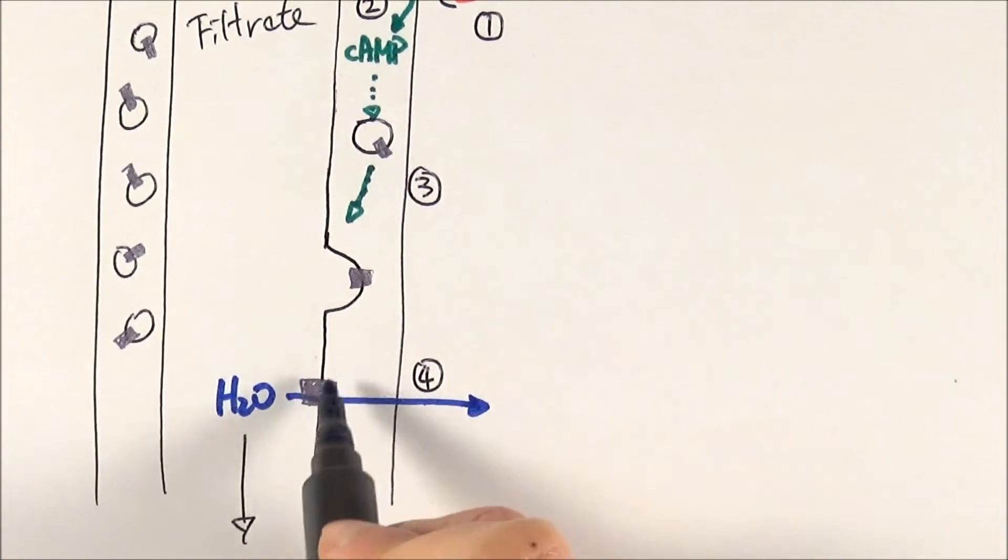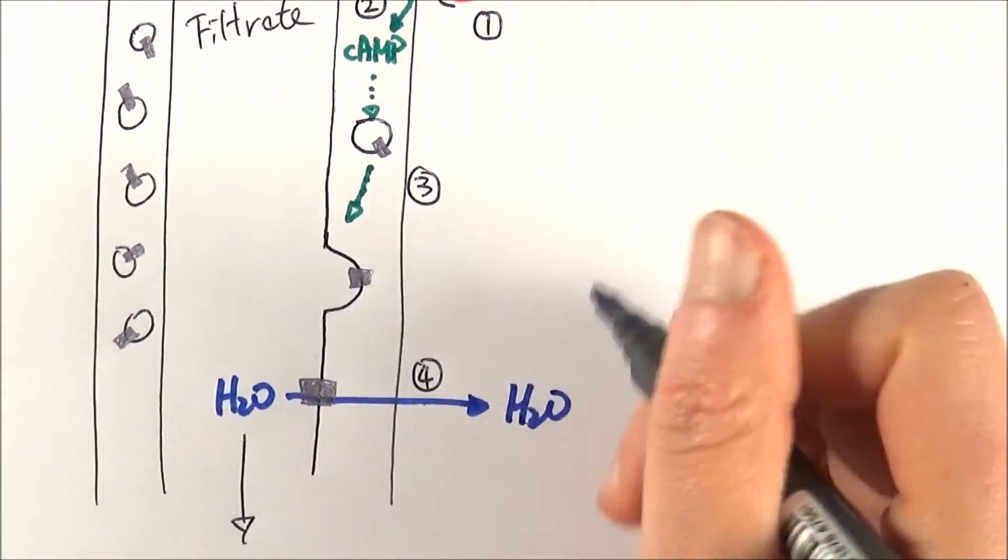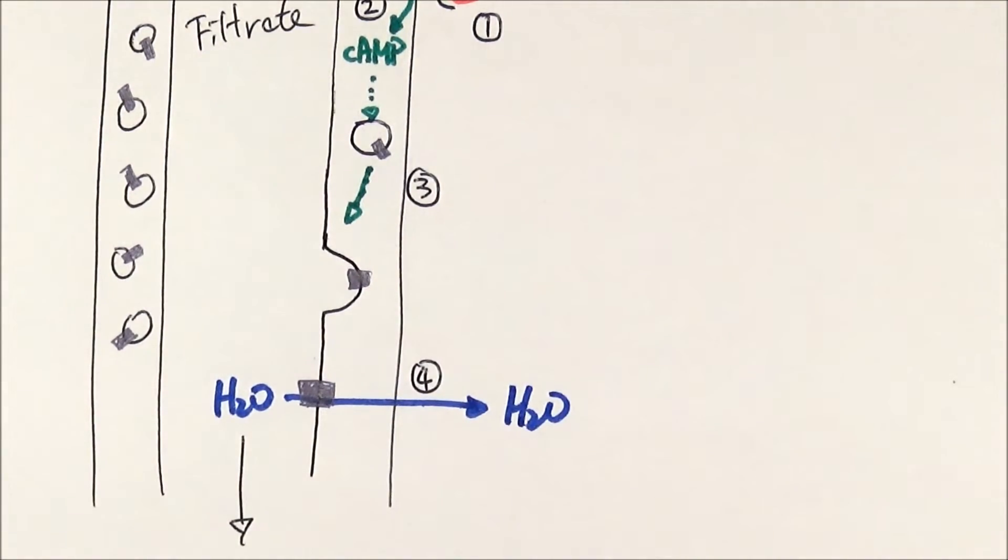And because now there is an aquaporin inside, the water in the filtrate can easily move across into the tissue fluid and then into the blood, by osmosis.